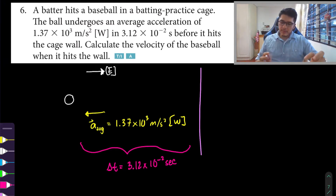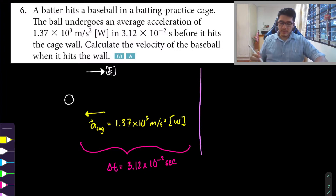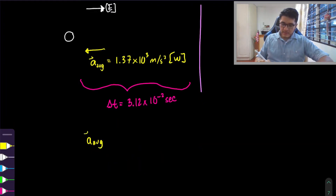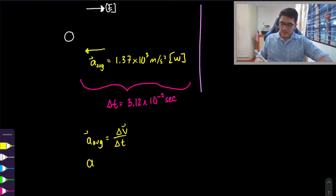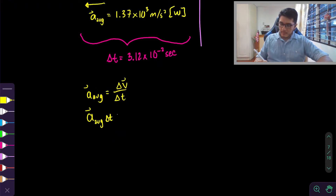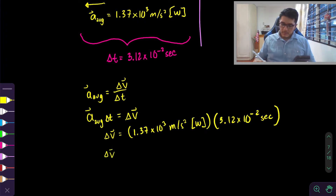In this case we don't have the initial velocity or the final velocity, but because we know the average acceleration during a time interval and the time interval itself, we can use our formula for acceleration. Our average acceleration is the change in velocity over the change in time. We multiply both sides by the change in time to isolate for the change in velocity, and putting in the values, our average velocity comes out to 42.74 meters per second.